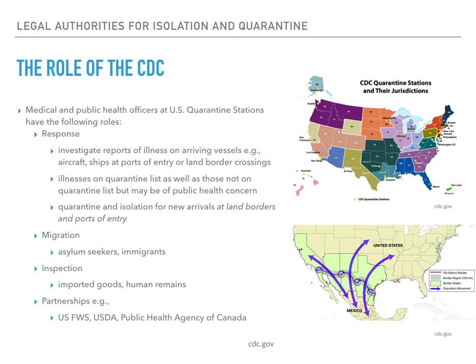Public health workers still respond to reports of ill travelers aboard airplanes, ships, and at land border crossings. Officers also collect and monitor health information for new immigrants and asylum seekers, and inspect entering materials that may pose a threat to human health, such as human remains being repatriated to the U.S. for burial and wildlife. The CDC also works with partners including the U.S. Fish and Wildlife Services, the U.S. Department of Agriculture, local and state public health departments, state public health laboratories, state and territorial epidemiologists, and bi-national public health partners like the public health agencies of Canada and Mexico.